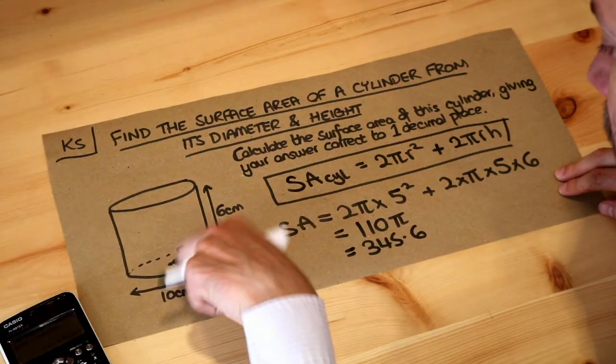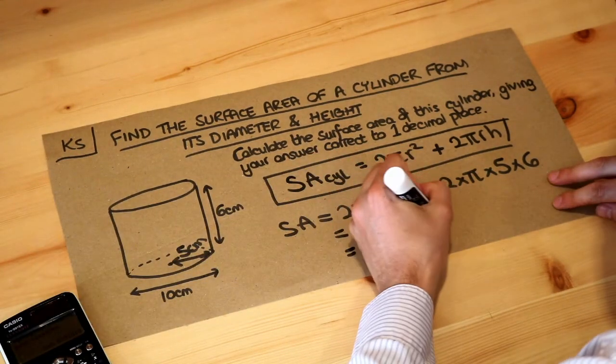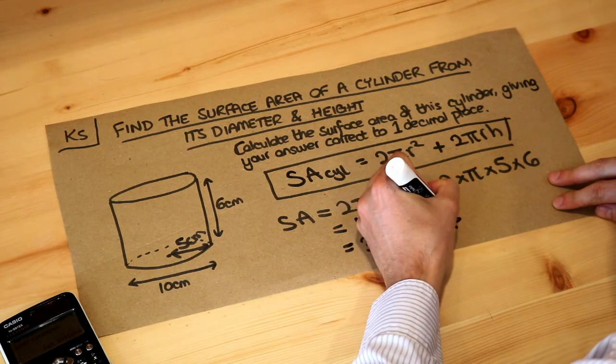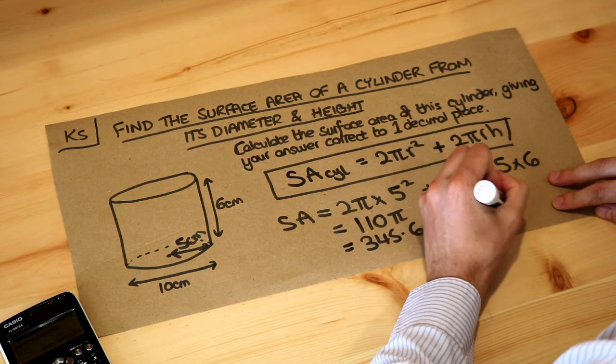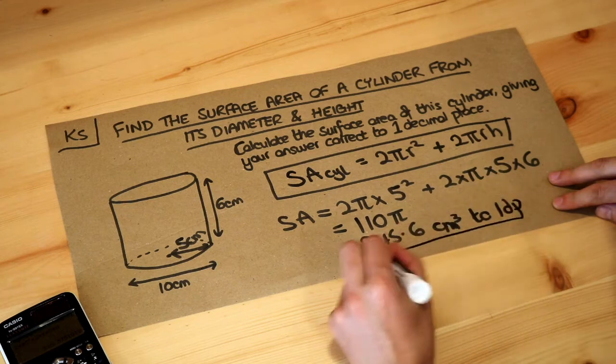And what's the unit? Well, these are in centimeters, so the unit of volume here would be centimeters cubed, and that was to one decimal place. So that is the final answer.